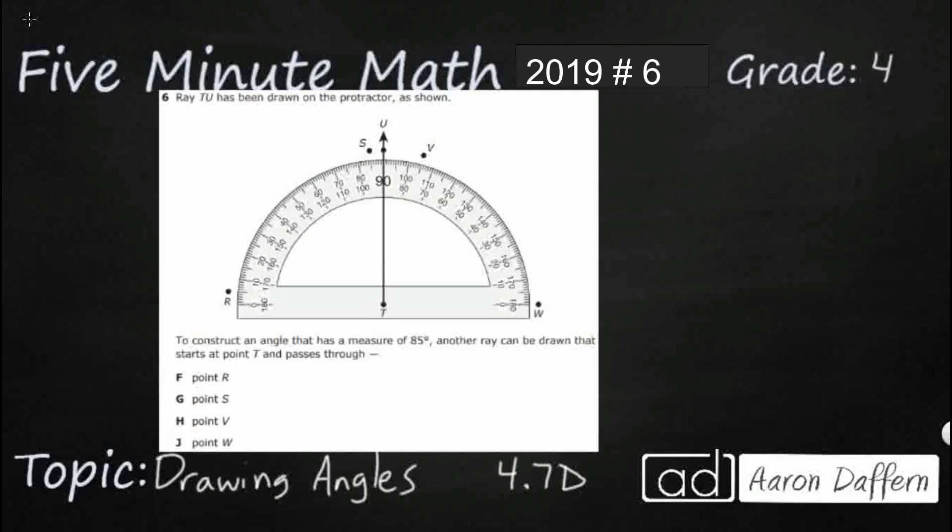So, we have a ray. We don't see that very often. Ray TU means this line right here. It's called a ray because it has a starting point at T, and it's got this arrow right after it goes through U, which means it goes on forever. So, a ray starts somewhere and then continues on forever.